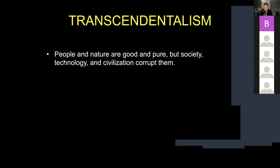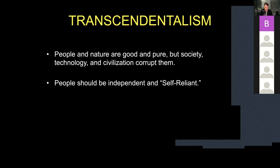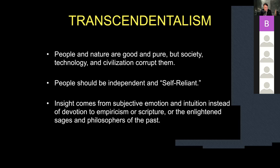In that sense, he maybe presages the transcendentalism coming to that part of the country in the coming decades. Transcendentalism held that people and nature are good and pure, but society, technology, and civilization corrupt them — a Rousseauian angle. People should be independent and self-reliant. Insight comes from subjective emotion and intuition rather than devotion to empiricism or scripture. So you can see the elder Wieland as a precursor who has that same tendency of self-reliant transcendentalism.